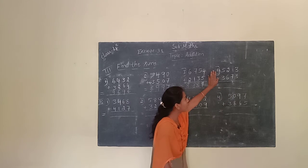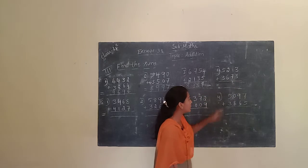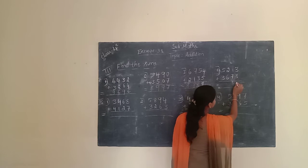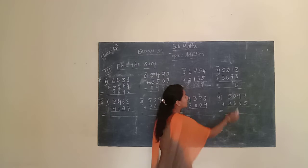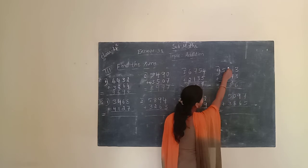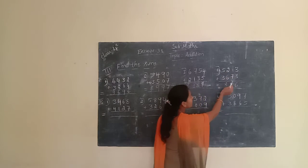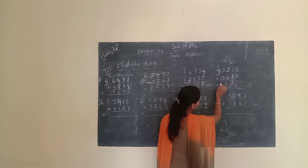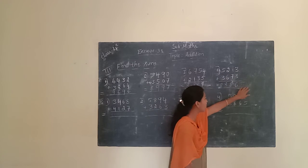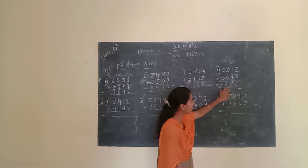Next, give one more example. The given number is 5,213 plus 3,673. Now we have to find out the sum. First, we have to start at the unit place. Unit place is 3 plus 3. 3 plus 3 is 6. We have to write 6. Next, move to the 10th place. 10th place is 1 and 7. 1 plus 7 is 8. We have to write 8. Next, move to the 100th place. 100th place is 2 and 6. 2 plus 6 is 8. We have to write 8. Next, move to the 1000th place. 1000th place is 5 plus 3. 5 plus 3 is 8. We have to write 8. So 5,213 plus 3,673 equals 8,886.